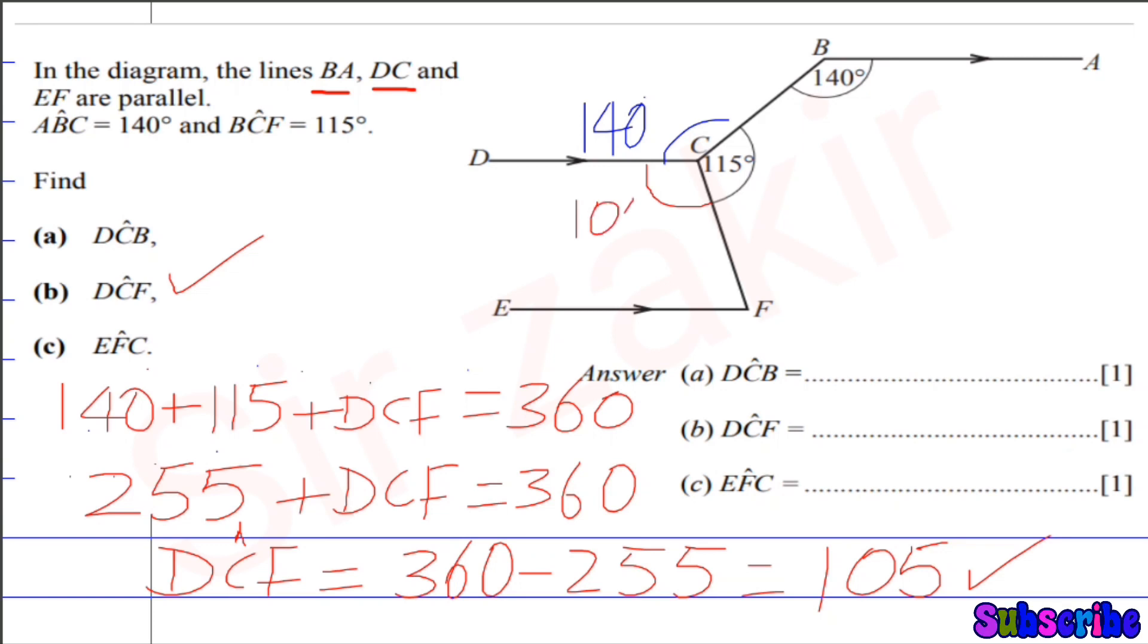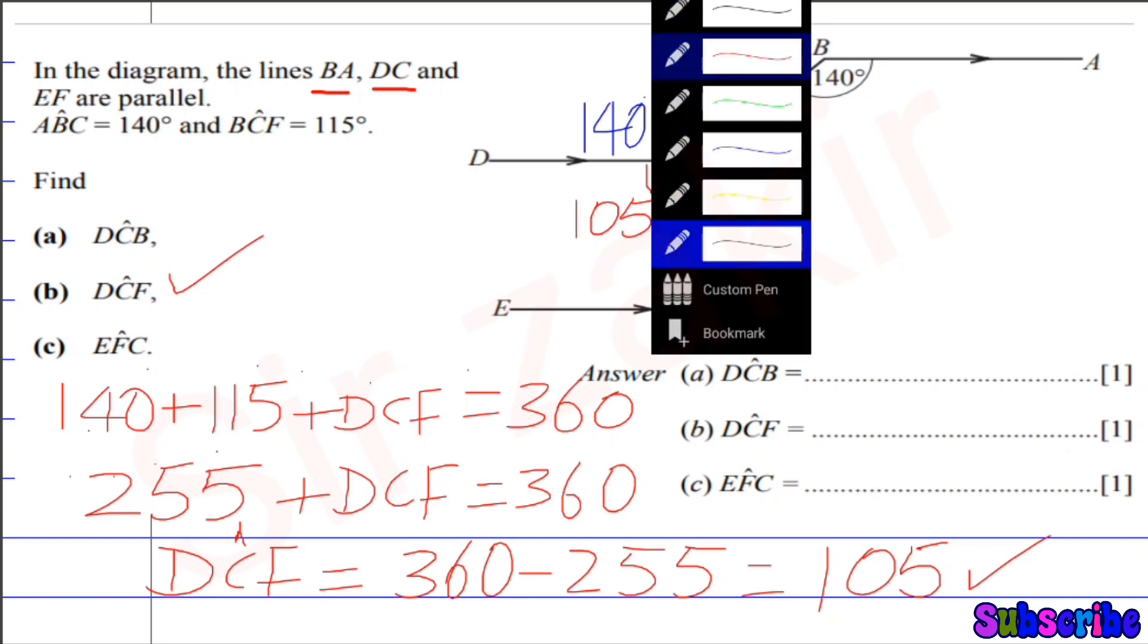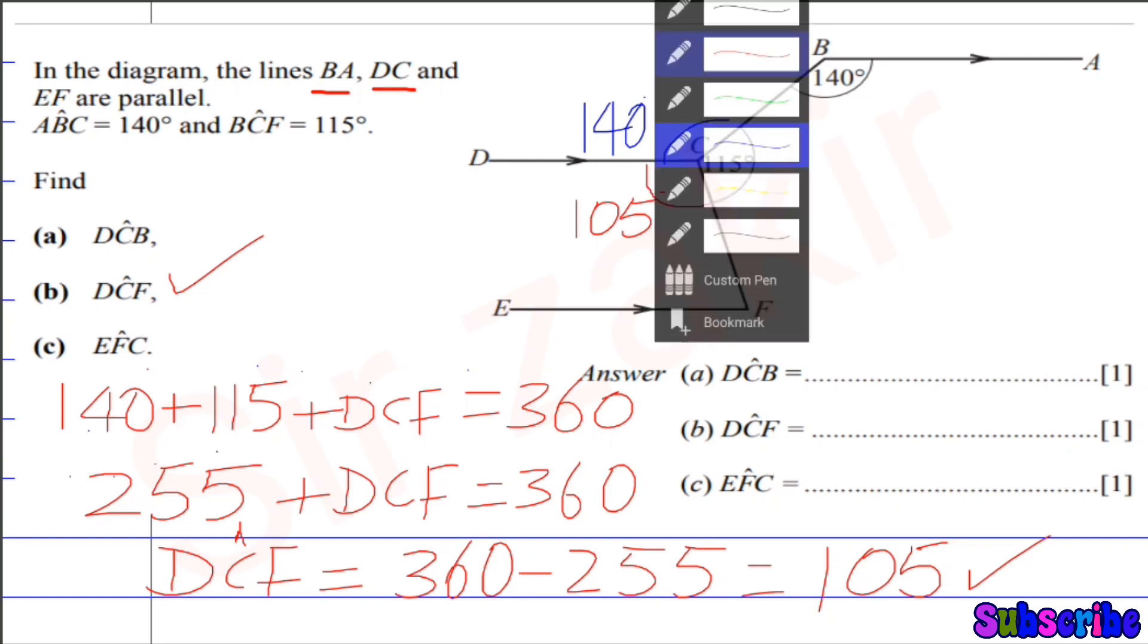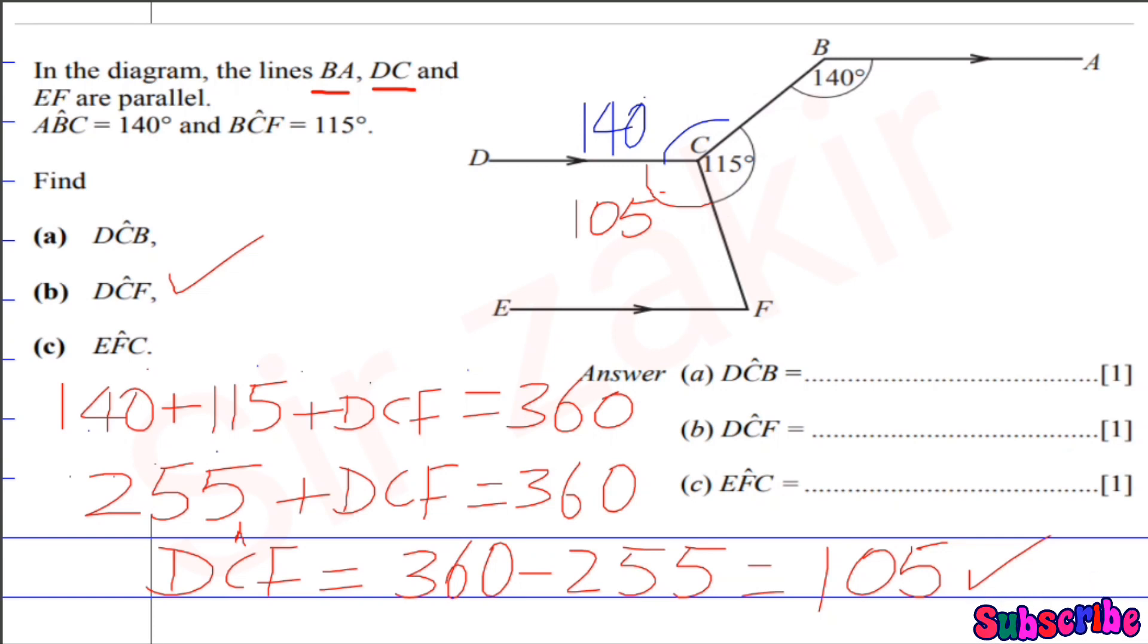So this angle is 105 degrees. Also students, these three lines BA, DC, and EF are parallel. So if I draw here these blue color lines, this is EF, this is DC. EF and DC are parallel.